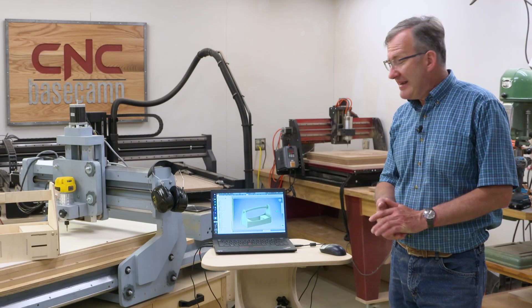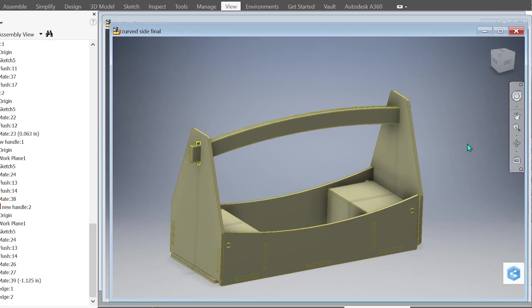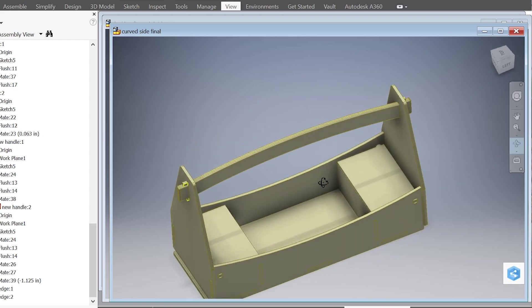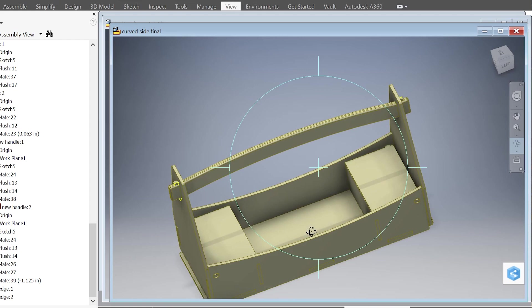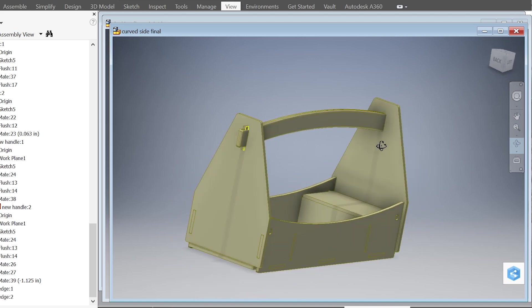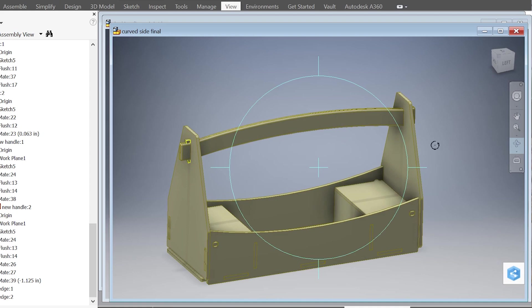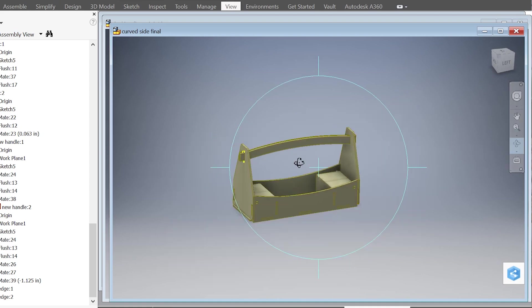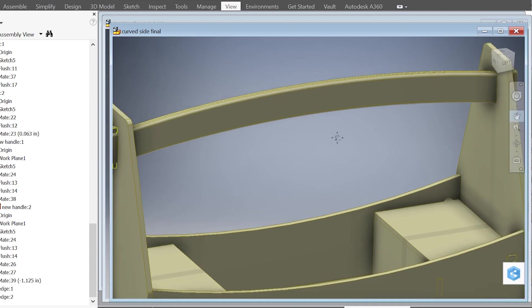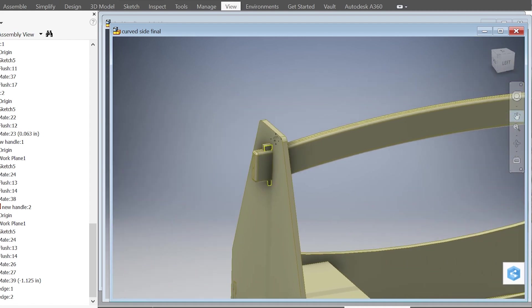Well, the first tote we're going to build is a curved sided tote. And I think you can see the lineage and how it comes from our original Shop Notes tote. So what we have then is bottom, two sides which interlock into that bottom, our two ends which will capture both the bottom and the sides, a handle. And the handle will be kind of fun because we're going to capture the handle with a wedge. The handle is two parts of plywood which will be glued together forming the cavity for the wedge.